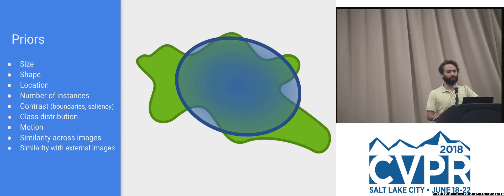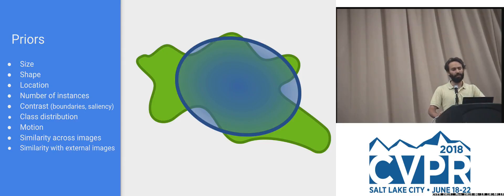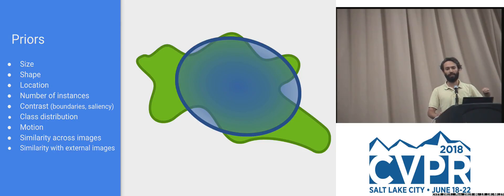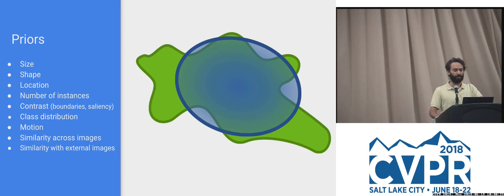Priors are all the things you know about the world that you want to encode in your learning algorithm — as a regularization term, as something that guides the hyperparameters, or injected indirectly into the training strategy through pre-training and fine-tuning. When looking at a paper in this area, always look for which priors are being used, both explicitly and implicitly, because those are the ones that will break down when you want to use it in your application domain.